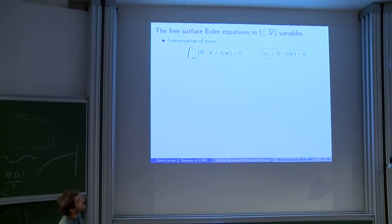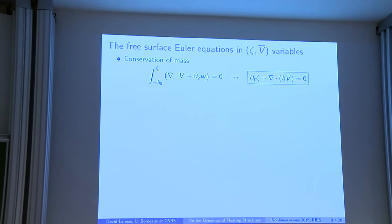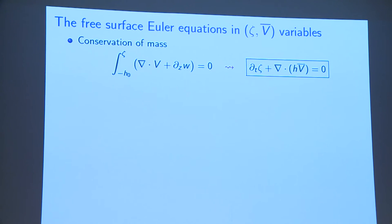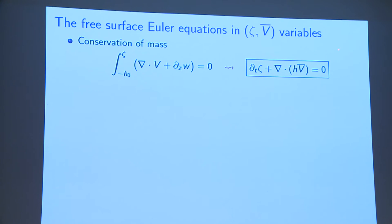Let me formulate the equation in the variables zeta and v-bar. The first equation on zeta is a reformulation of the kinematic equation — very straightforward. You take the incompressibility condition: v is the horizontal component of velocity, w is the vertical one, so this is divergence-free. You integrate from the bottom to the top and find the standard conservation of mass equation: d_t eta plus the divergence of the discharge equals zero. This is exact, doesn't use the irrotationality assumption — it's very robust and exact.